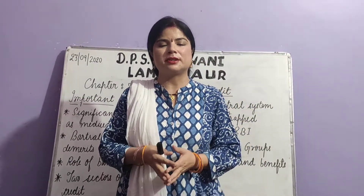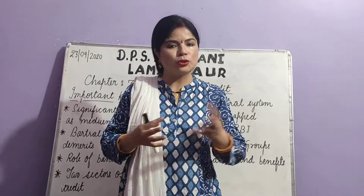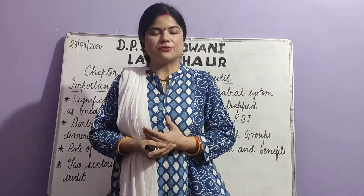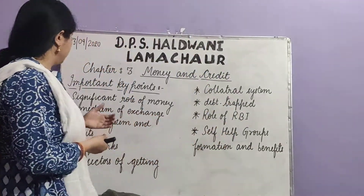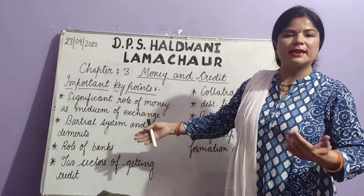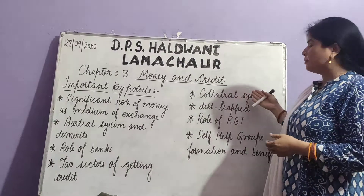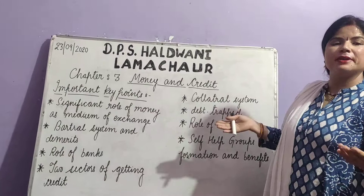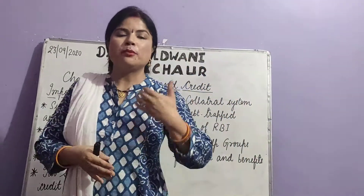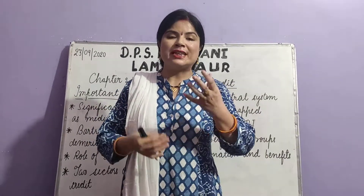Nowadays students, we are doing the Money and Credit chapter, and today we are going to discuss the important key points of this chapter so that all the subtopics can be revised in a proper way. The different key points we are going to discuss today are: significant role of money as a medium of exchange, barter system and demerits, role of banks, two sectors of getting credit, collateral system, debt-trapped, role of RBI (Reserve Bank of India), self-help groups — formation and benefits. With the help of all these points, we will come to know about the concept of the whole chapter which we have already done. So let's start with our first subtopic.